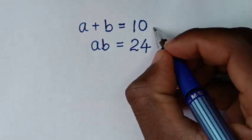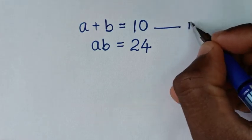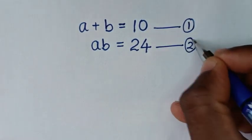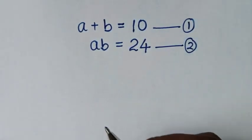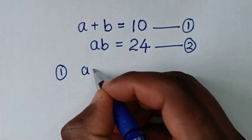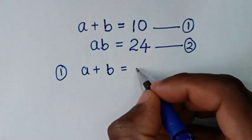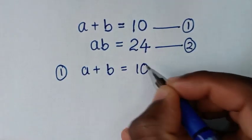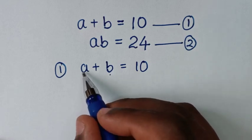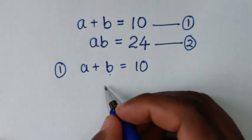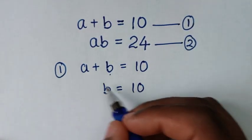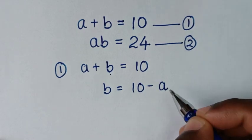We'll start by letting this as equation 1 and this as equation 2. Then, from equation 1, which is a plus b is equal to 10, we'll make b the subject. So we'll take a to the other side, so it will be b is equal to 10 minus a.